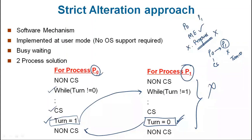Now let's talk about bounded waiting. Bounded waiting means that after some time it is confirmed that the other process will get the critical section. The order is: first P0 executes, then P1, then P0, then P1 — so bounded waiting is satisfied.